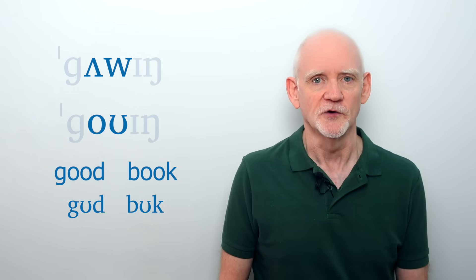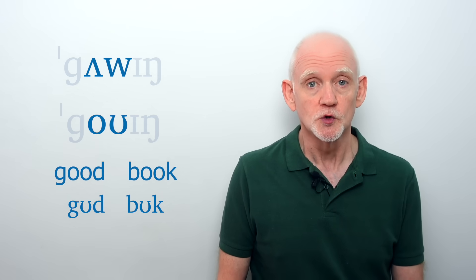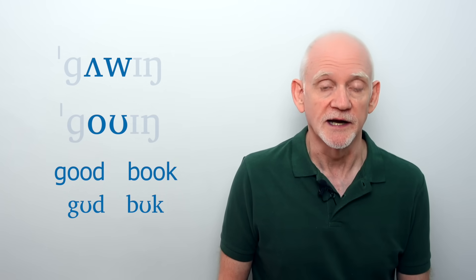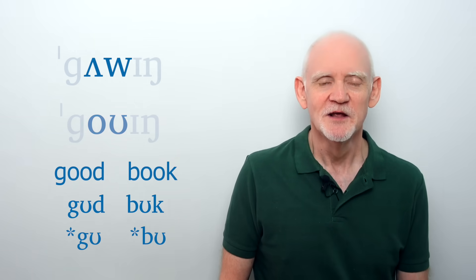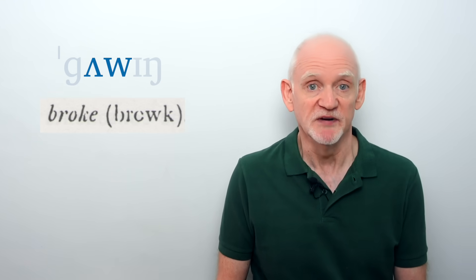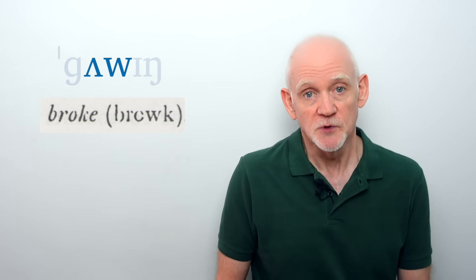But it completely violates the generalisation that English doesn't end words in ʊ or any of the other checked vowels. That's why they're called checked. They have to be followed by a consonant. We have words like good and book, but no words like goʊ and boʊ.